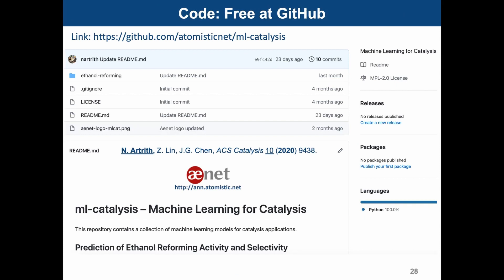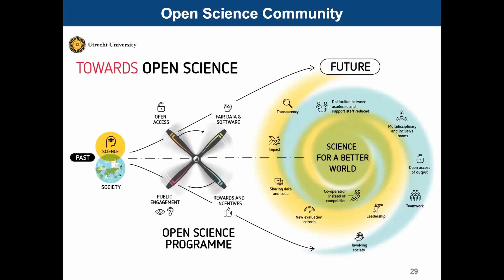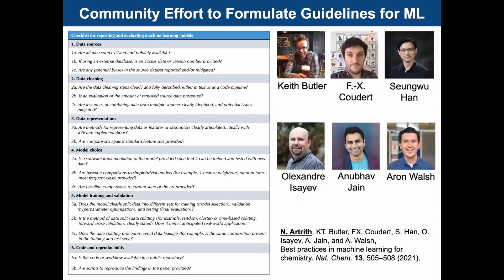All of our machine learning models discussed today are standard and based on Scikit-learn. Our models can be obtained from this GitHub link. I find it important that research is reproducible, and this is why we generally try to publish our database and machine learning models. This is also in the spirit of the open science community. I am talking about this here because reproducibility of machine learning research in chemistry has become an issue. Together with six colleagues who are experts on machine learning in chemistry, we recently formulated a checklist for machine learning publications in chemistry. Hopefully this can provide some guidelines for authors and also for reviewers.